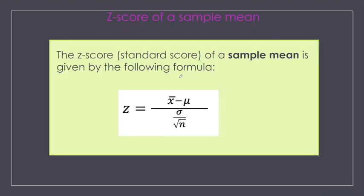Now we have a new z-score formula for sample means because we have a new standard deviation. My z-value is going to be my sample mean minus our population mean, over our new standard deviation, which is sigma divided by the square root of n. Be really careful when plugging this into your calculators — you have to keep track of PEMDAS: parentheses, exponents, multiplication, division, addition, subtraction. If you have a graphing calculator, put some parentheses in there — it will save you from accidental errors.